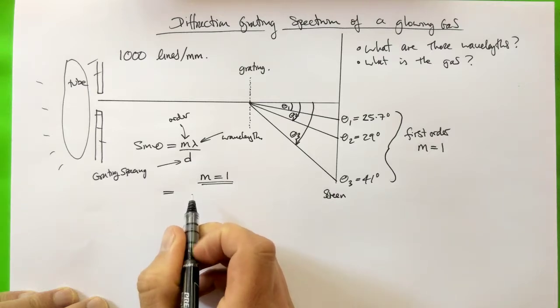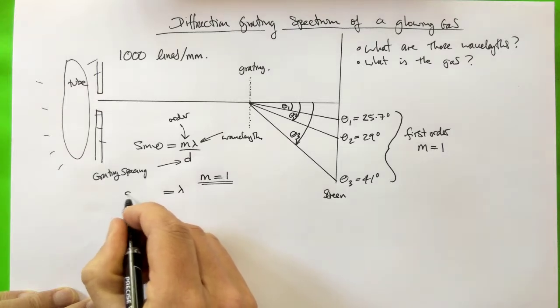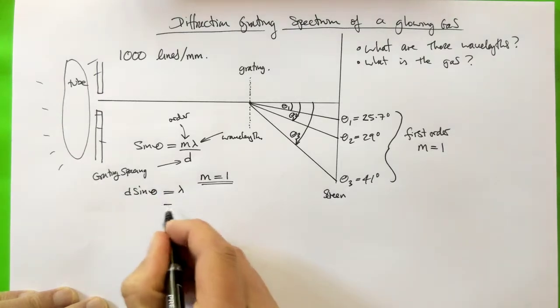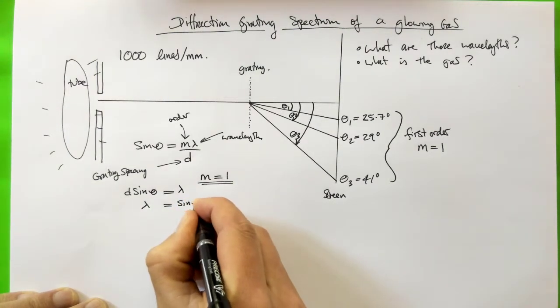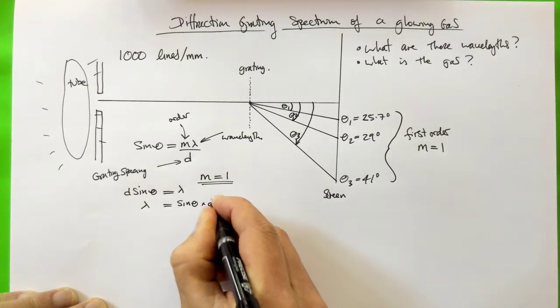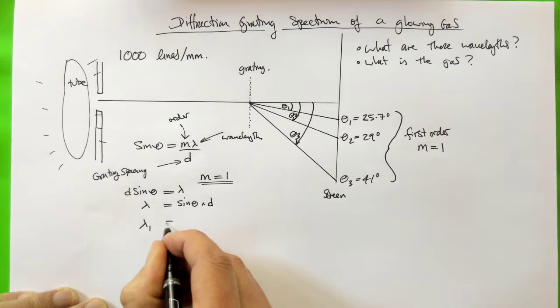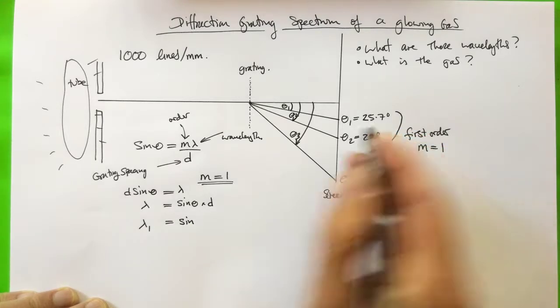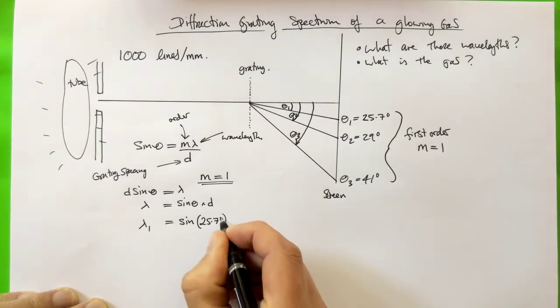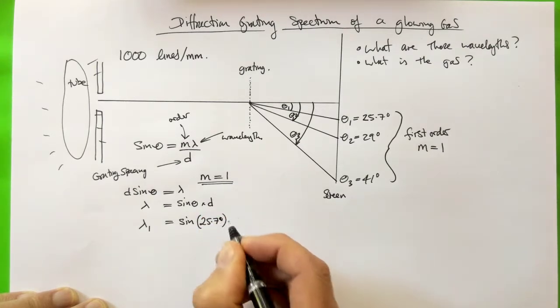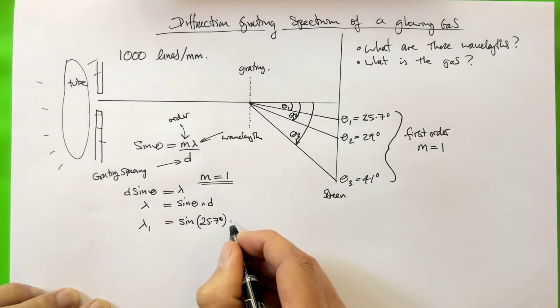So we've got sine theta equals lambda over d. So we want to rearrange for lambda, so let's just leave you down where it is. Lambda equals d sine theta, and let's put it this way around so that we're happy with dealing with it. Now we can just go about our business. So lambda 1 equals the sine of theta 1, which is 25.7 degrees. Now make sure you put your degrees into your calculator or computer as degrees, because your computer might think they're radians, in which case you'll have to divide by 57.3.